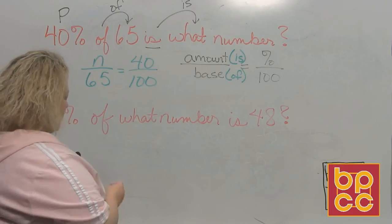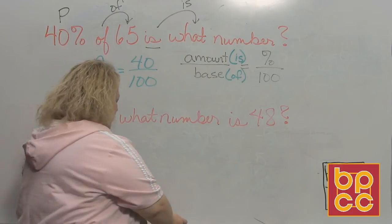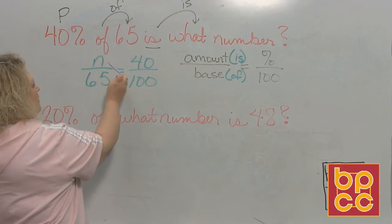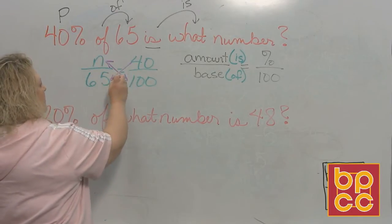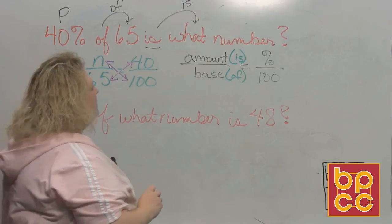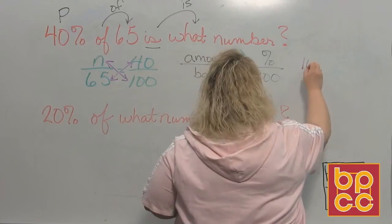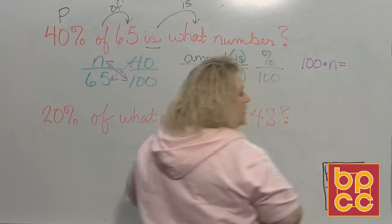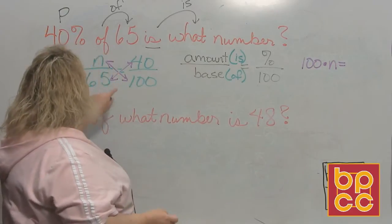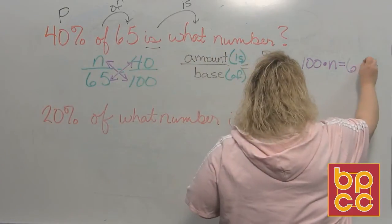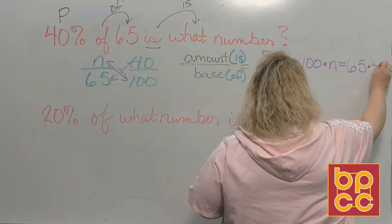So then all you have to do is cross multiply in order to solve this problem. Remember to cross multiply means multiplying the shape of an x. So we have 100 times n, because that's what we don't know, is equal to 65 times 40.